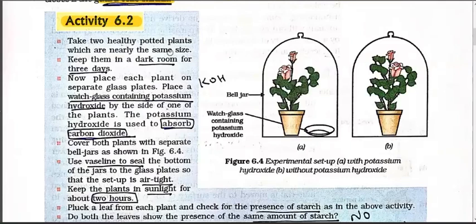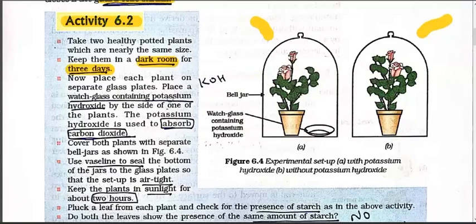Take two healthy potted plants which are nearly the same size. Keep them in a dark room for three days. As I told you, keeping in a dark room means the photosynthesis process cannot occur. So the plant will use up its reserve starch material for energy requirements. Whatever new glucose or carbohydrate was going to be formed will not form, and within those 3 days no new photosynthesis will occur. Whatever starch they already have stored, they utilize for their basic metabolic activities.